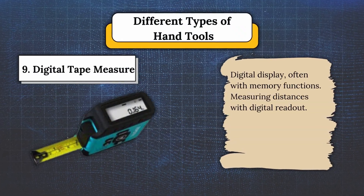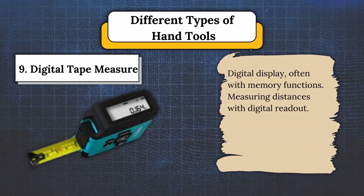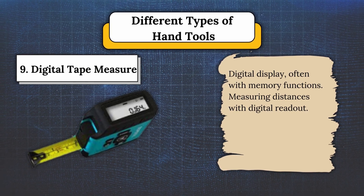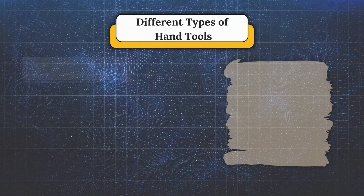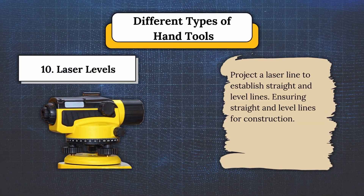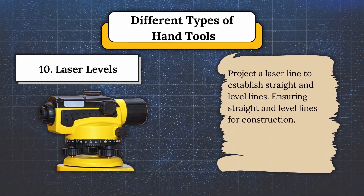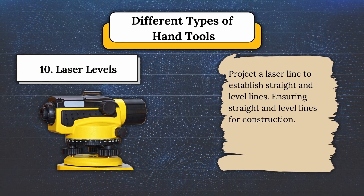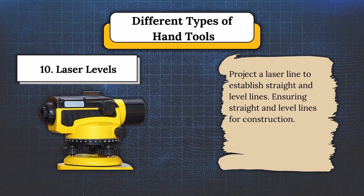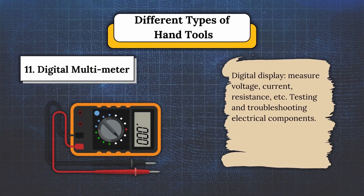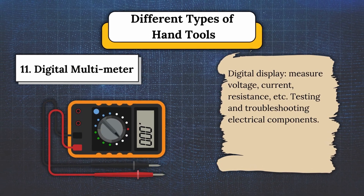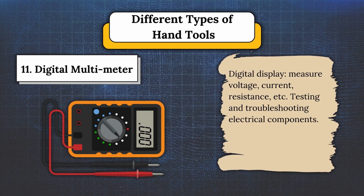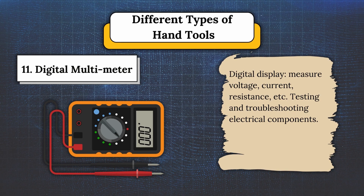Number nine, digital tape measure — with a digital display, often with memory functions, used for measuring distances with a digital readout. Number ten, laser levels — project a laser line to establish straight and level lines, ensuring straight and level lines for construction. Number eleven, digital multimeters — with a digital display, used to measure voltage, current, resistance, and more, for testing and troubleshooting electrical components.